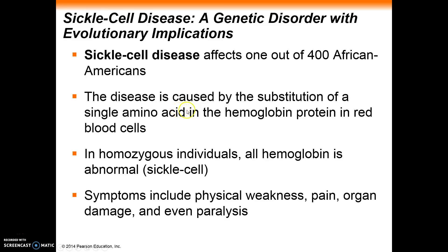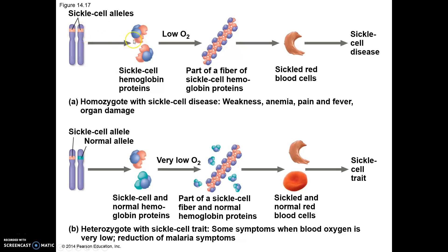Sickle cell anemia is caused by the substitution of a single amino acid in the hemoglobin protein — the protein that carries oxygen. In homozygous individuals, hemoglobin is abnormal and can bind to itself, causing long chains which form fibers that deform the shape of the red blood cells. This leads to breakage of those red blood cells, resulting in anemia-type conditions such as physical weakness, pain, and organ damage — all from a single defect.